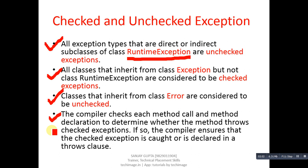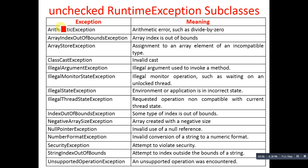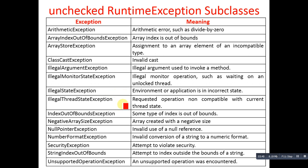Now you can see the list of unchecked RuntimeException subclasses. First is ArithmeticException. Second is ArrayIndexOutOfBoundsException. Third is ArrayStoreException — assignment to an array element of an incompatible type. Fourth is ClassCastException — invalid cast. Fifth is IllegalArgumentException — illegal argument used to invoke a method. Sixth is IllegalMonitorStateException — illegal monitor operations such as waiting on an unlocked thread. Then IllegalStateException, IllegalThreadStateException, IndexOutOfBoundsException, NegativeArraySizeException, NullPointerException, NumberFormatException, SecurityException, StringIndexOutOfBoundsException, and UnsupportedOperationException.